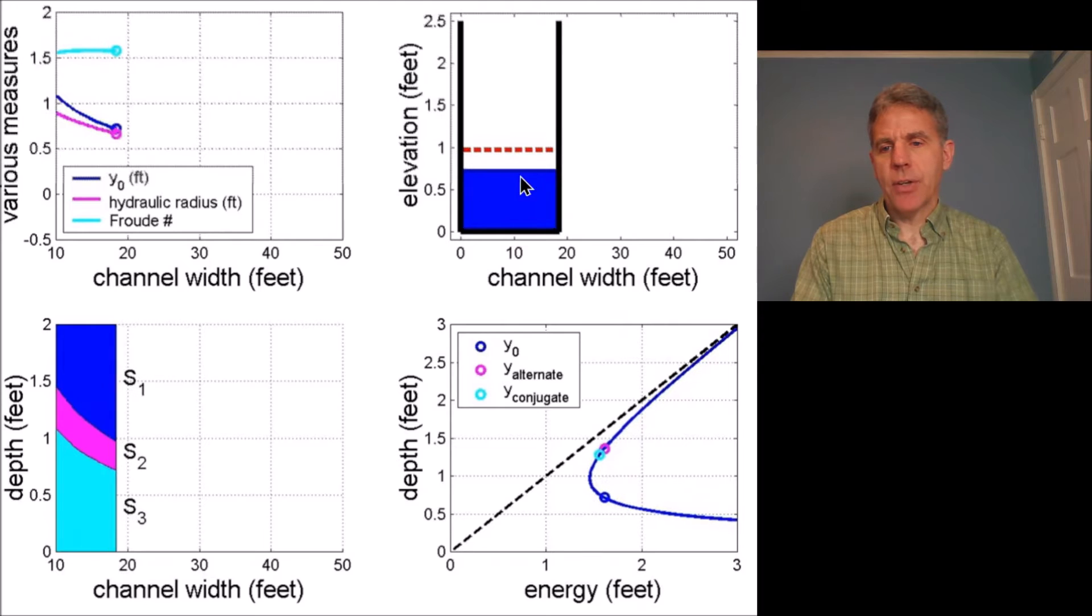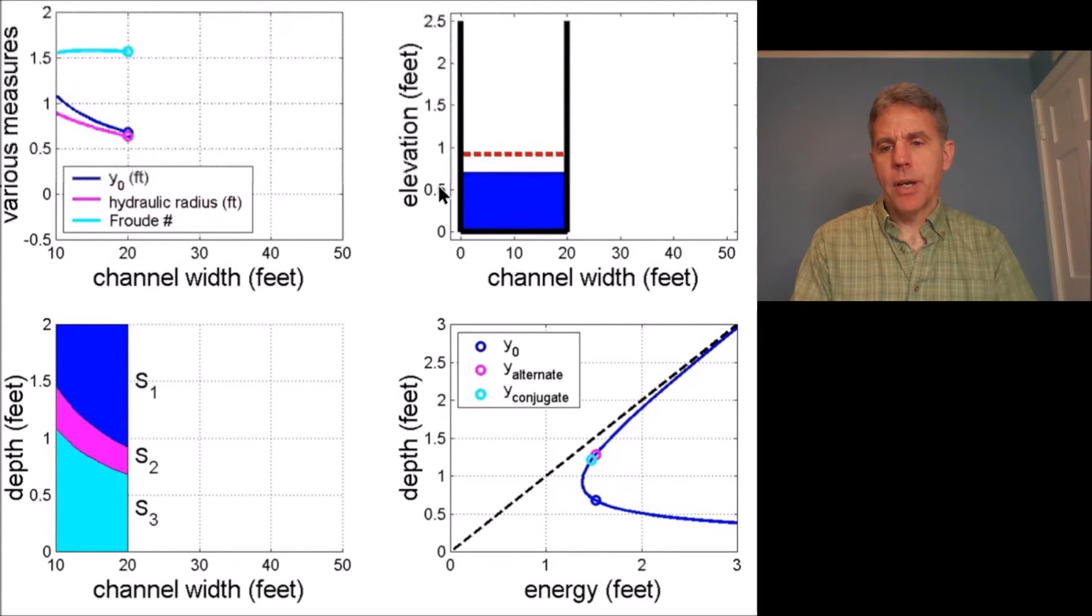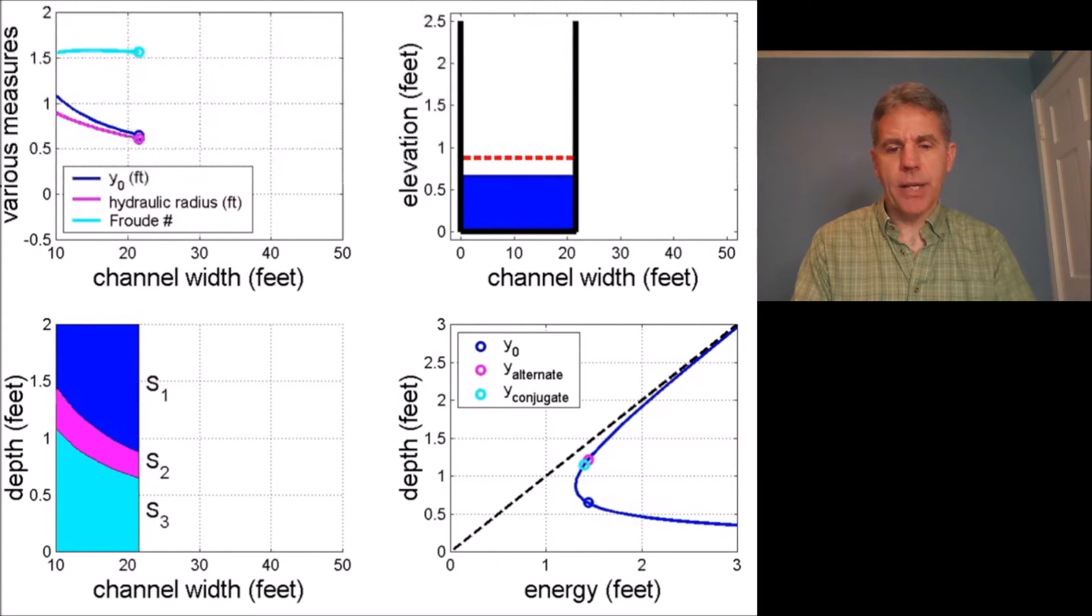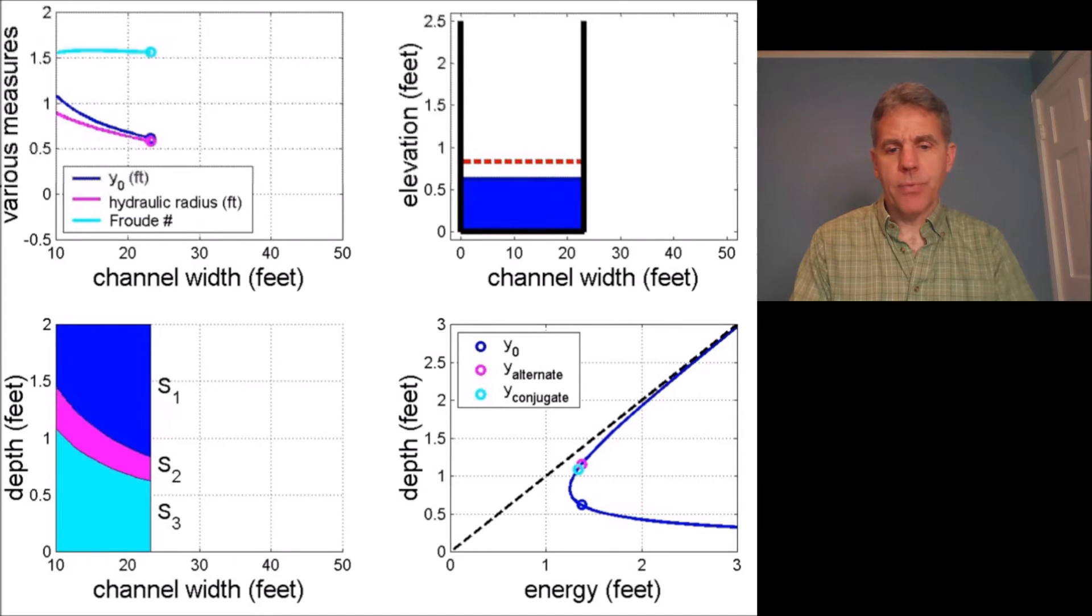You can see that the channel is getting wider as the animation takes place. We're at about 25 feet of width right now so let me pause it there and you can see that the Froude number is staying more or less fixed. The normal and hydraulic radius are both diminishing as the animation plays out.